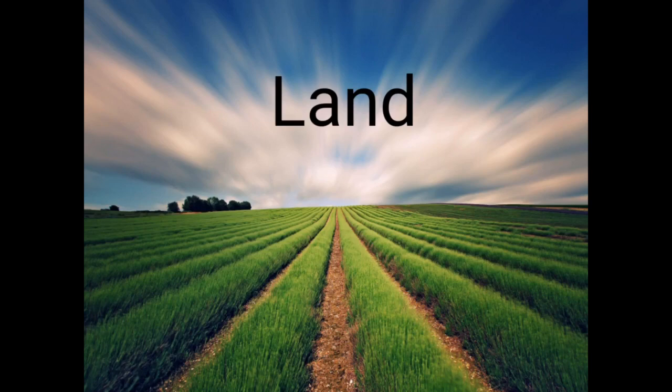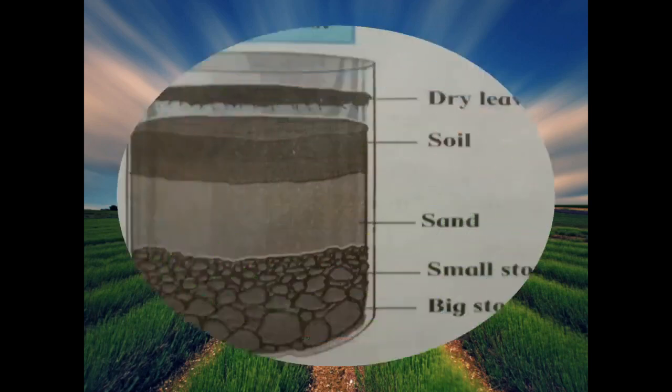Let us see exactly what land is made of. So let's try this experiment. First we have to take a transparent plastic bottle, a handful of soil, some stones, sand, some dry leaves, and water.